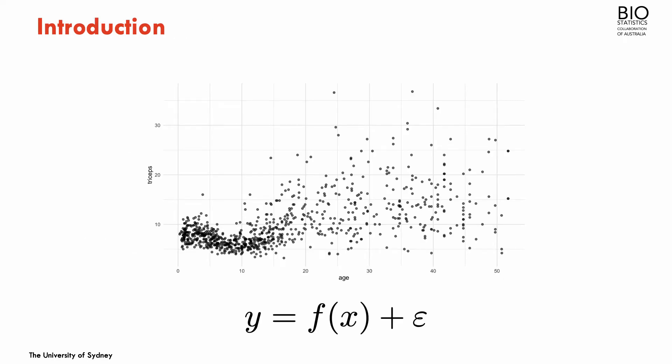The objective is going to be, as always, to get an estimator for this function that relates the predictors with the outcome. In this setting, triceps is a continuous measurement, so we're going to focus on the continuous outcome. But what I'm going to say here can be extended to other types of outcomes, in particular binary and count data.